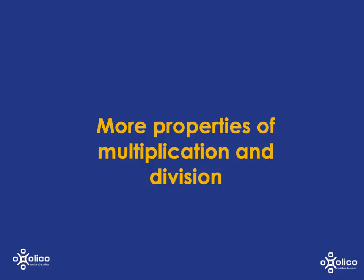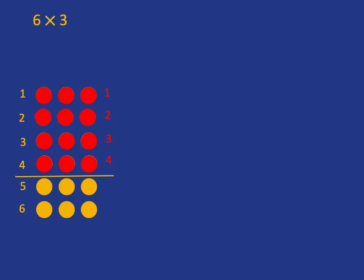Let's have a look at some more properties of multiplication and division. We know that something like this is just 6 lots of 3, so 6 multiplied by 3. But we can see that as being made up of 4 lots of 3 plus another 2 lots of 3.